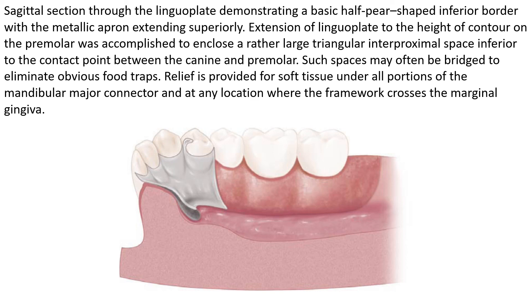Such spaces may often be bridged to eliminate obvious food traps. Relief is provided for soft tissue under all portions of the mandibular major connector and at any location where the framework crosses the marginal gingiva.